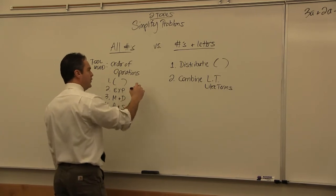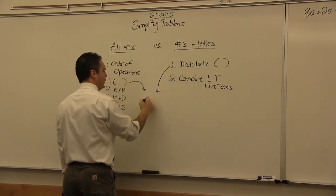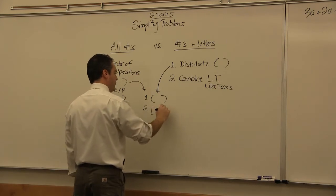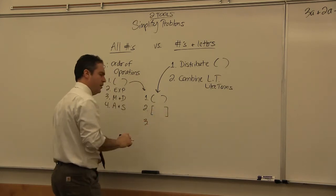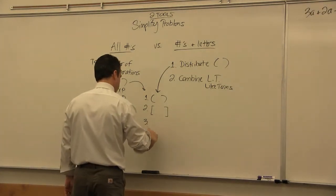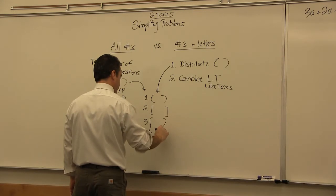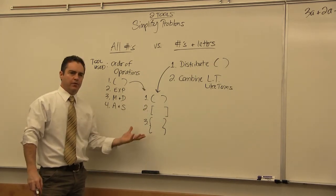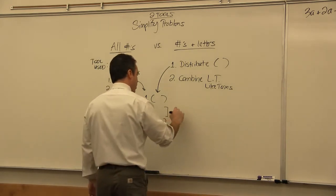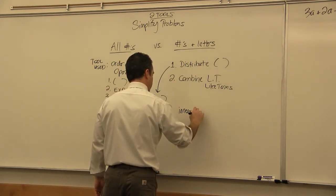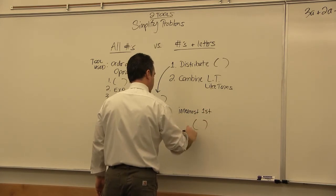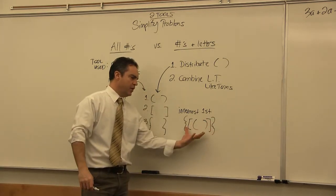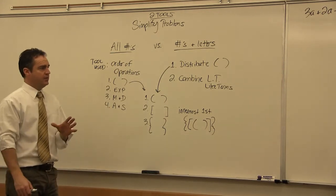The first step in both tools involves parentheses, which come in three kinds: rounded parentheses, square brackets, and squiggly brackets. They come in this order — rounded first, square second, squiggly third — also described as innermost first, meaning they come in layers.